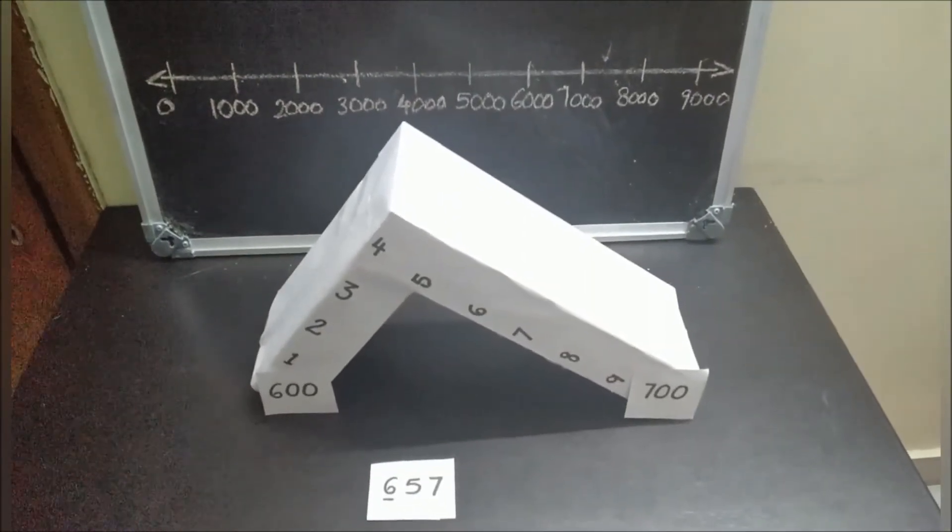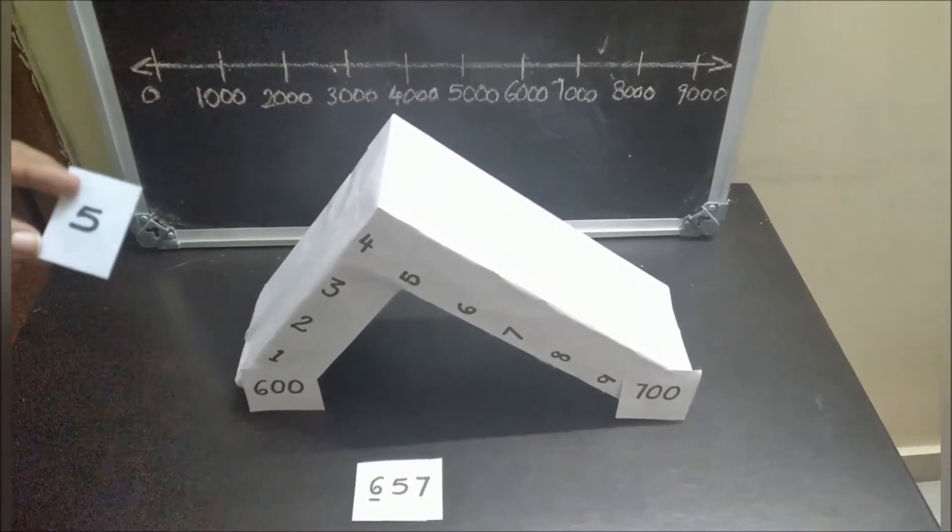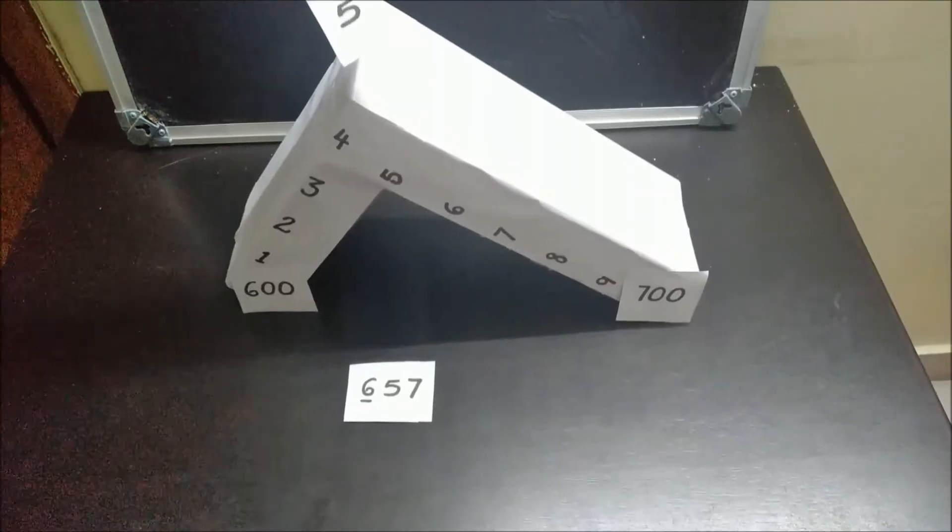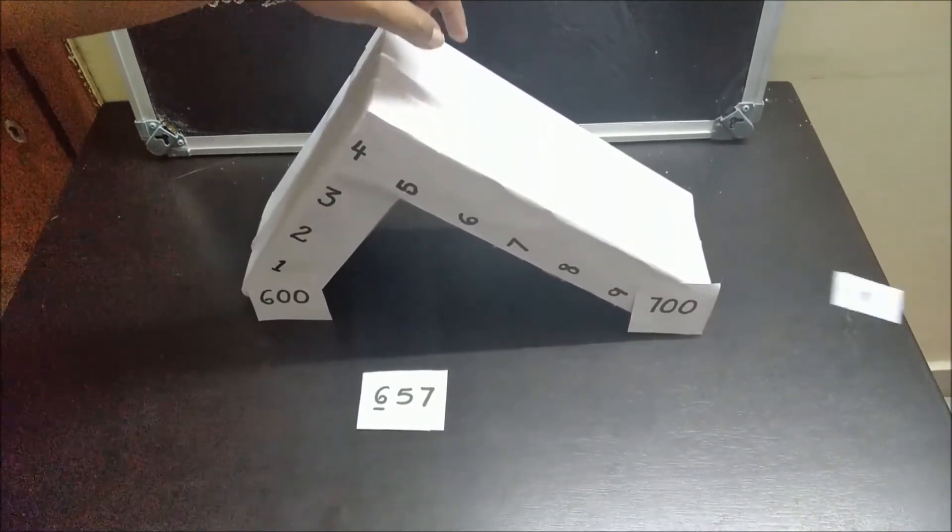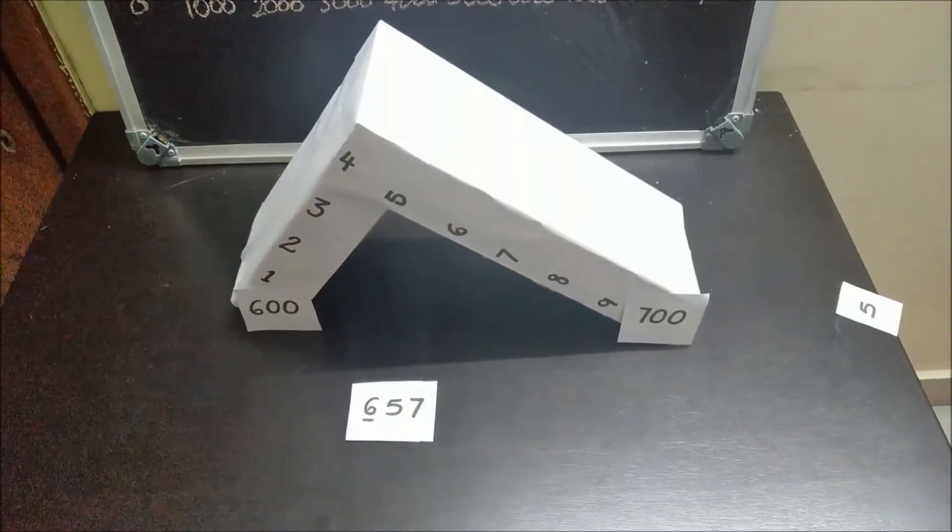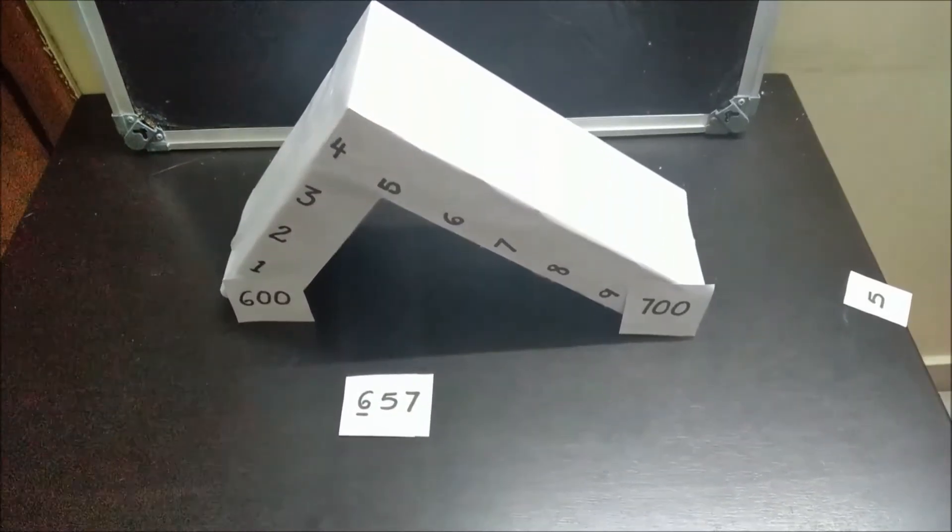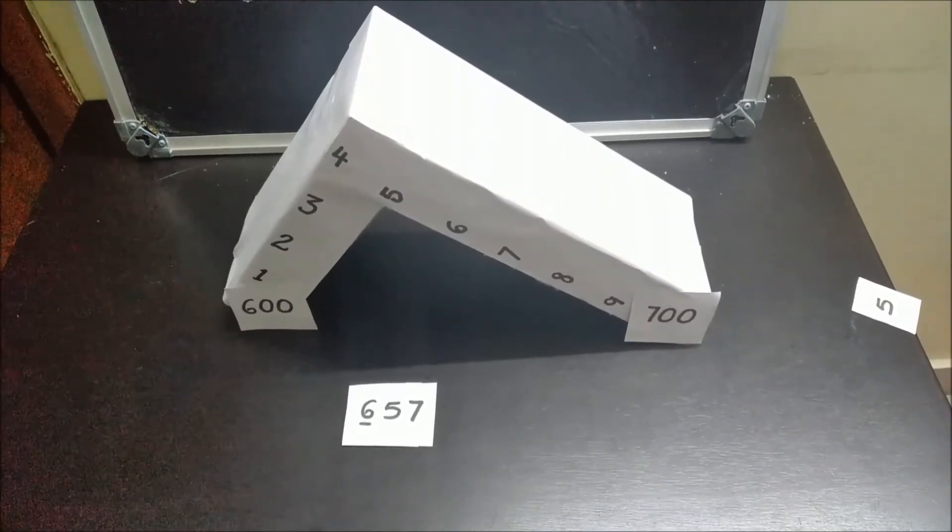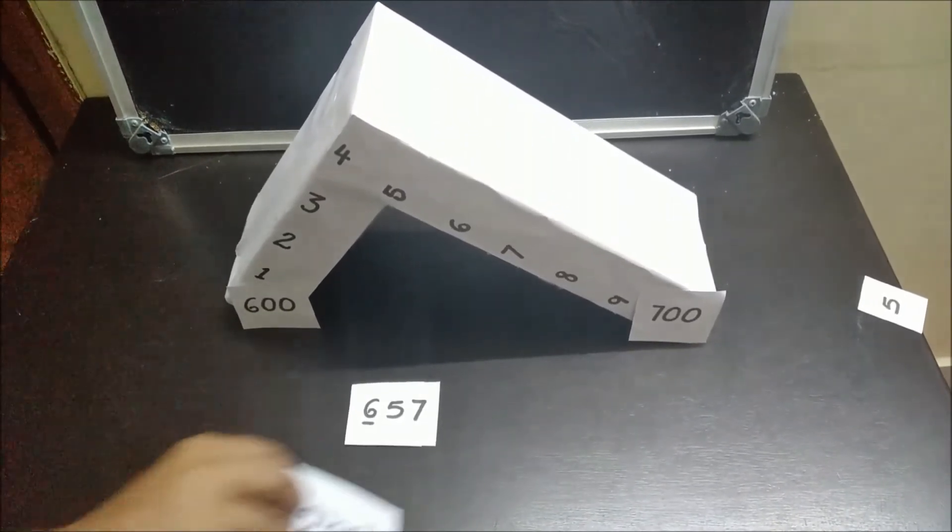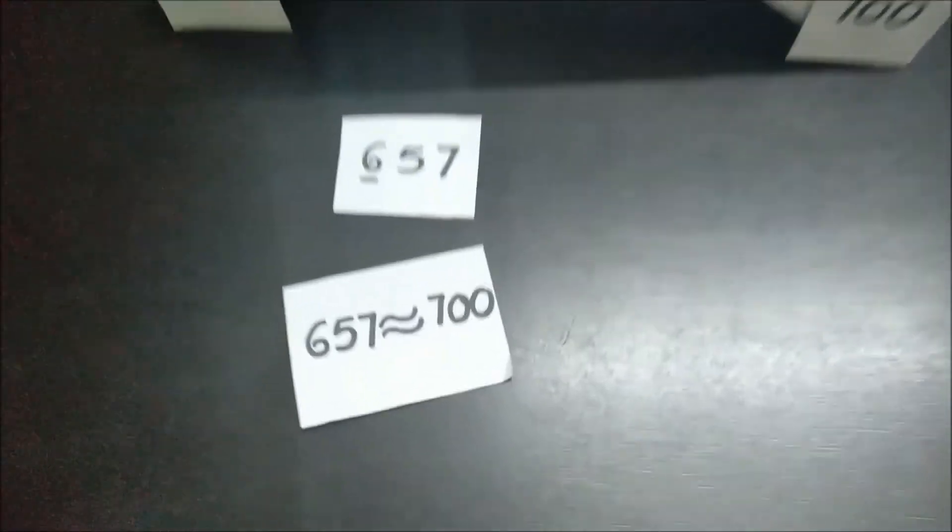Are you able to guess the answer? So, I have number 5 here. Let's see which side it falls. It fell towards 700. That means 657 is approximately equal to 700.